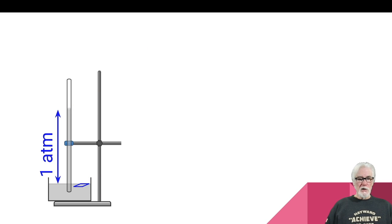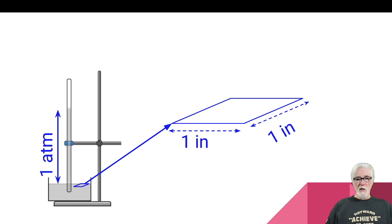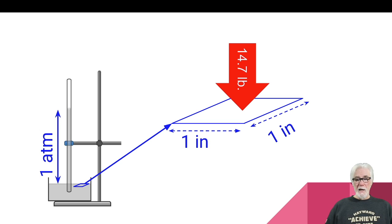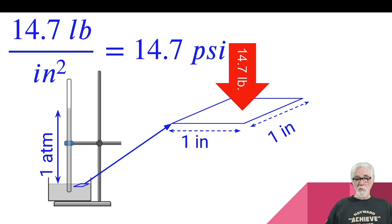Here's another way to think about pressure. If you took a square inch on the surface of the barometer, the force of all the collisions of air particles from the atmosphere would add up to about 14.7 pounds on average. So pound per square inch — or psi — became another unit of pressure. It refers to the definition of pressure in physics, which is the ratio of force to area. So 14.7 pounds over one square inch is 14.7 psi, and one atmosphere of pressure equals 14.7 psi. Pounds per square inch is something we use a lot in the United States.